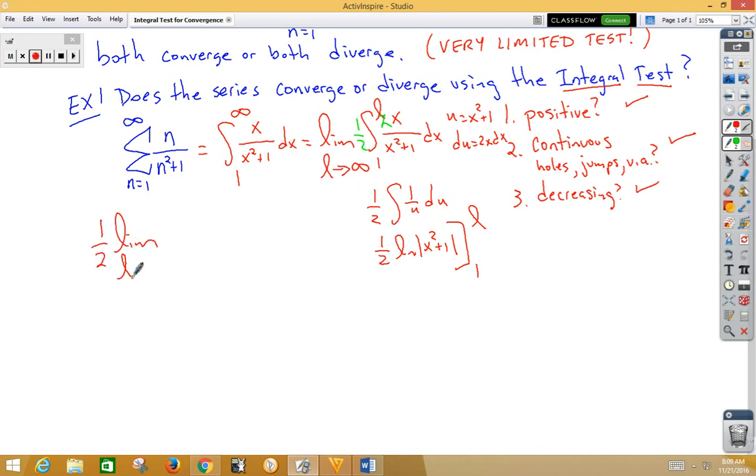So 1 half limit as L approaches infinity, we've got the natural log of the absolute value of L squared plus 1 minus the natural log of the absolute value of 1 squared plus 1. Well, this back term is natural log of 2, but our front term, as we go to infinity, it's going to go to infinity, which gives us a result of infinity, which means this particular series diverges.